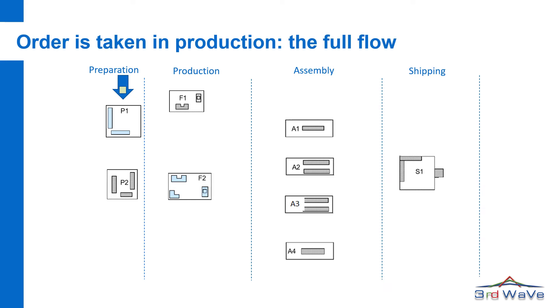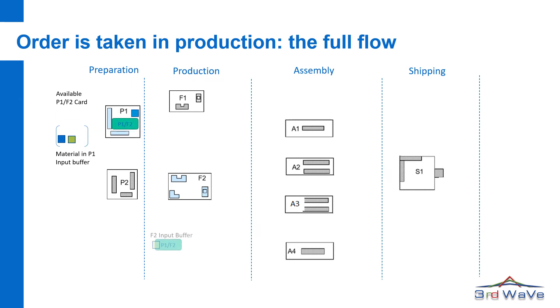Now the order can be taken into production. If the material and the downstream Polka cards are available, we can launch the job. The downstream jobs will be shown in the cell input buffers.